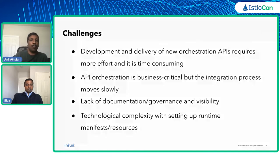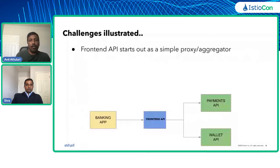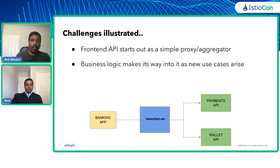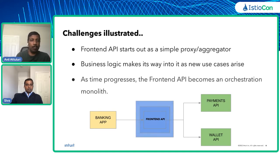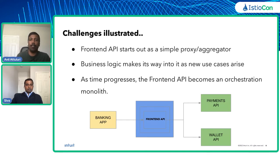Taking the same example of the payments and wallet API — this is how it starts: as a simple proxy or aggregator, very sleek. But as more logic is required or new use cases arise, more business logic gets put in. Eventually it becomes the one front-end API that everyone is using, with a central deployment pipeline that makes things more difficult to deploy and manage. That's the lifecycle of how orchestration APIs have evolved — they finally become very hard to manage.